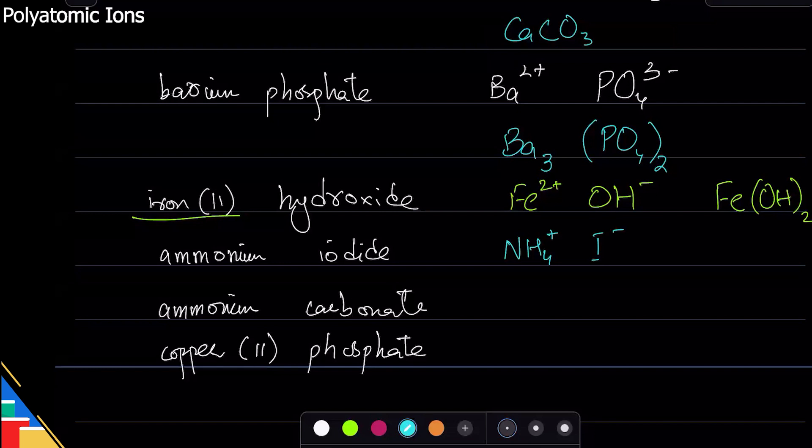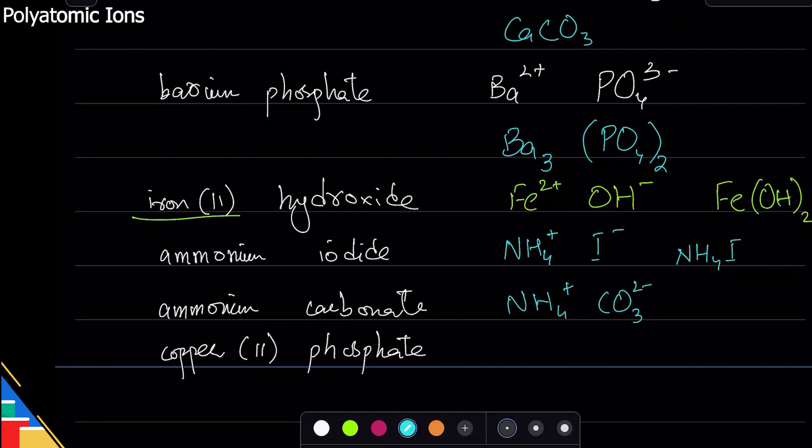Ammonium carbonate. Ammonium is NH4 plus, carbonate is CO3 two minus. Again ratio flip has to happen. One goes there, no need to write it, but two goes here. So I'll put brackets here: (NH4)2CO3. Notice I did not write carbonate in brackets because carbonate with one I don't have to write it.